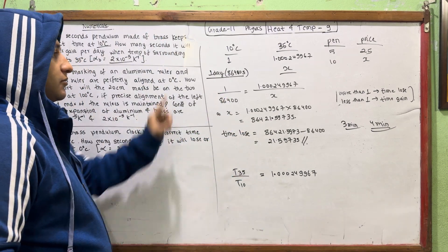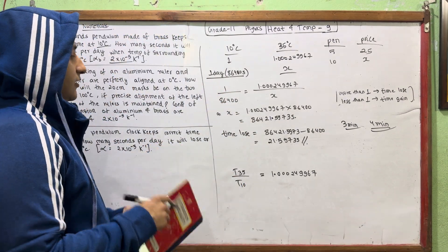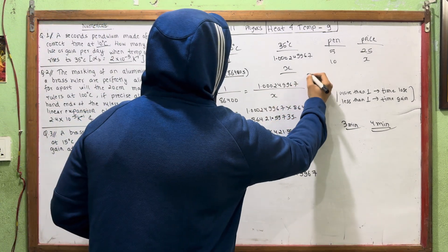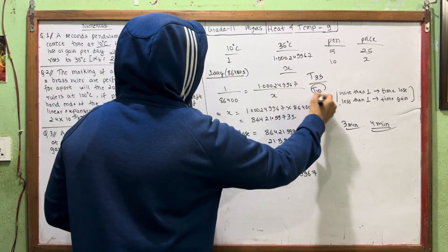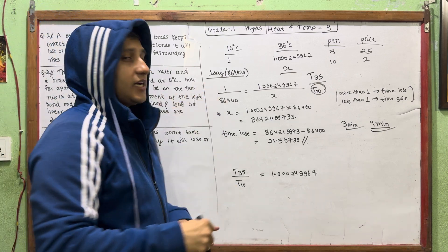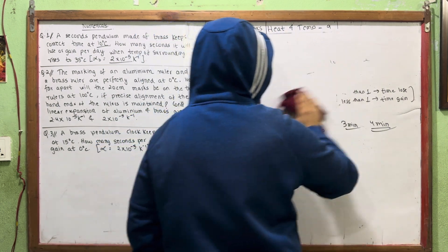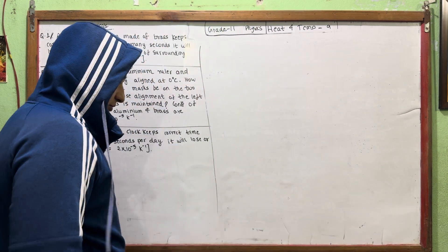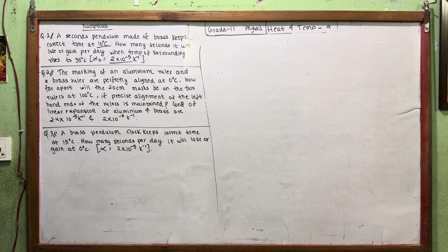Since T10 is less than T35, the pendulum gains oscillations but the net effect means it loses clock time. If you have any questions, let's move on to the next question.